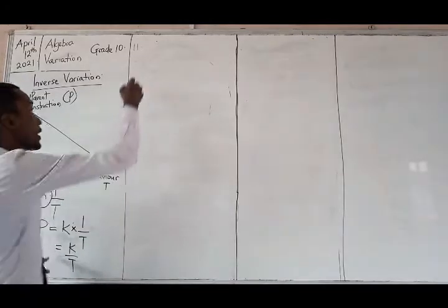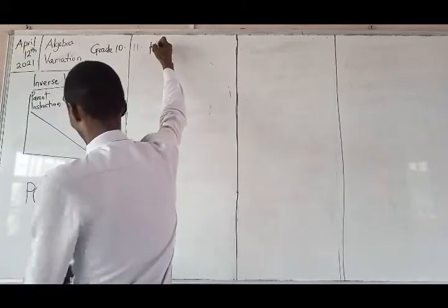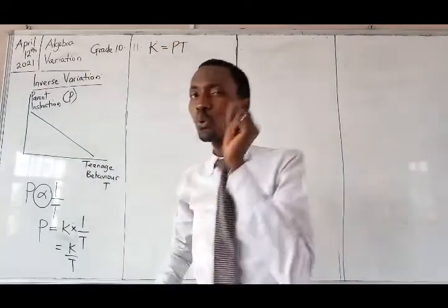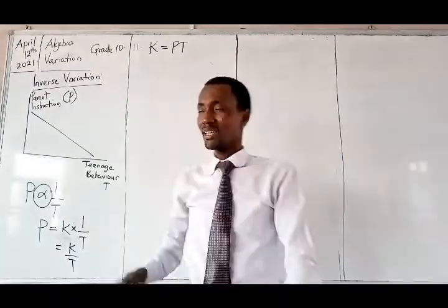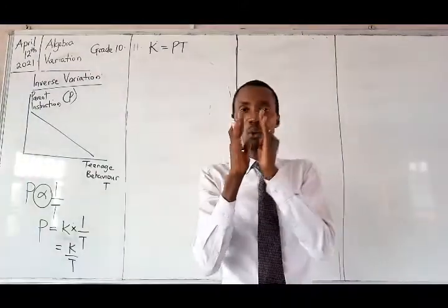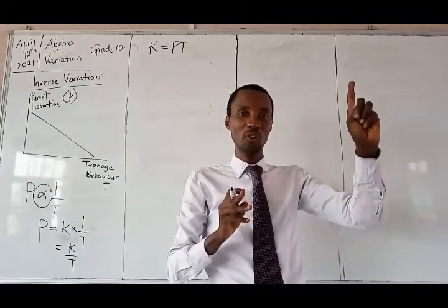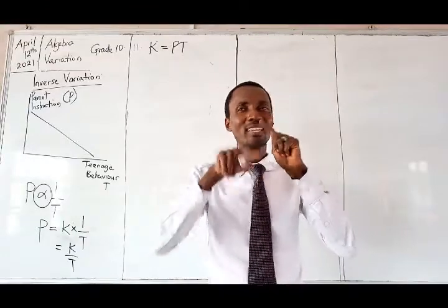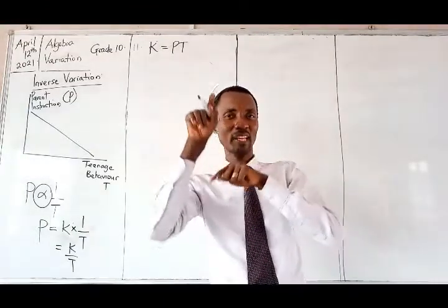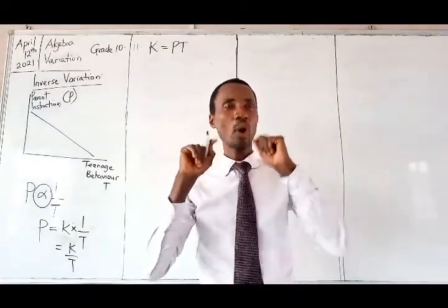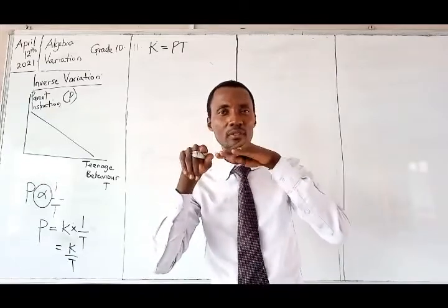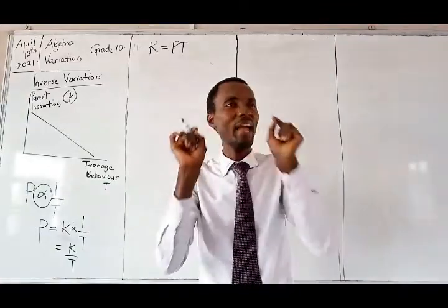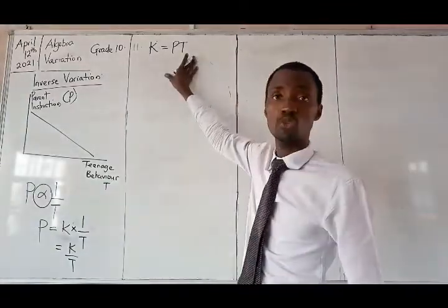So what will be K here? K will be equal to PT. So notice that for inverse, the terms you are relating will multiply themselves when you're looking for K. But for direct, the terms will divide themselves. When we talked about direct, the terms divided themselves, but now for the inverse, the terms will multiply themselves.